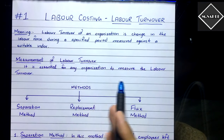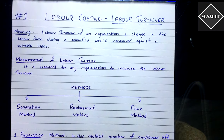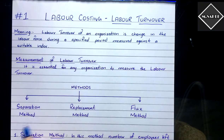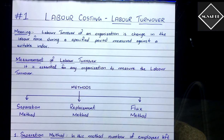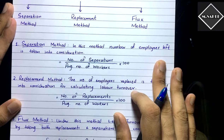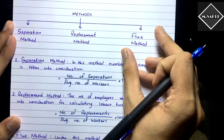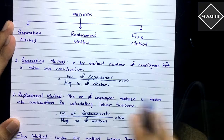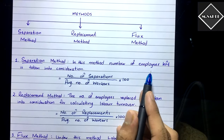It is essential for any organization to measure its labor turnover. We have three methods to do that: the separation method, the replacement method, and the flux method. The flux method is also called the dual method. We have proper formulas and methods to calculate labor turnover.